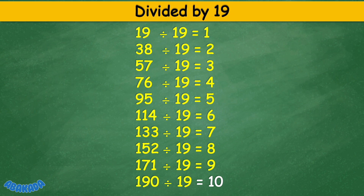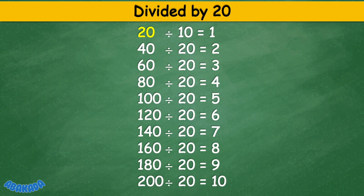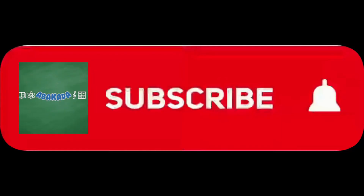Divided by 20: 20 divided by 20 equals 1, 40 divided by 20 equals 2, 60 divided by 20 equals 3, 80 divided by 20 equals 4, 100 divided by 20 equals 5, 120 divided by 20 equals 6, 140 divided by 20 equals 7, 160 divided by 20 equals 8, 180 divided by 20 equals 9, 200 divided by 20 equals 10. Thank you for watching.